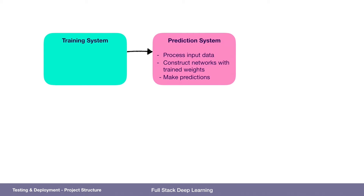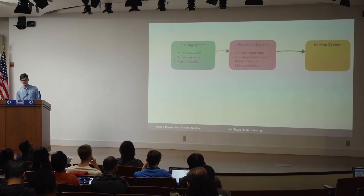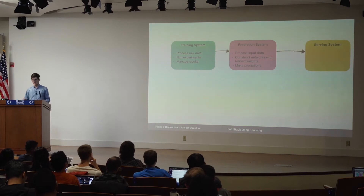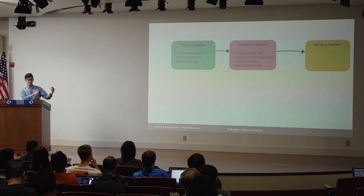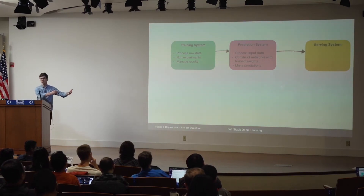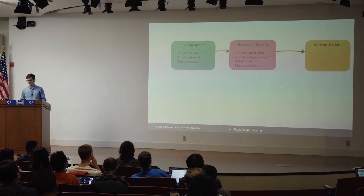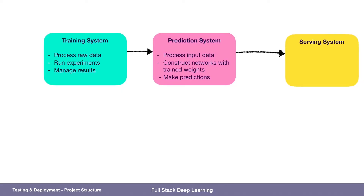To generate the prediction system, we have a different code base — it doesn't have to be a different repository, but it's a different set of files that we call the training system. The goal of the training system is to process raw data, run experiments, and manage the results. When we train the prediction system, the goal is for it to be deployed somewhere.